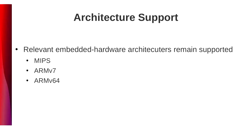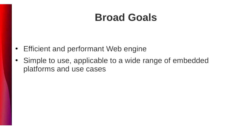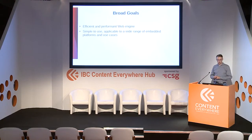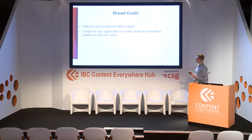As far as architecture support goes, we focus on supporting the broadest possible hardware architectures in use today — MIPS, ARM version 7, and ARM version 64. The broad goals of this project have stayed mostly unchanged since 2014: we want to provide an efficient and performant web engine that is still simple to use and applicable to a wide range of embedded platforms and use cases. So far we've been doing a pretty good job at that.